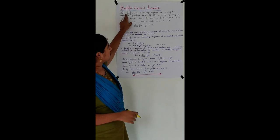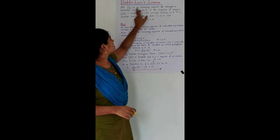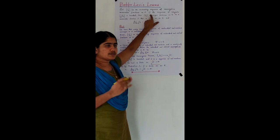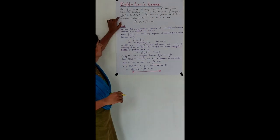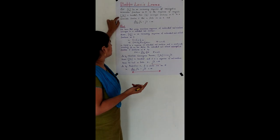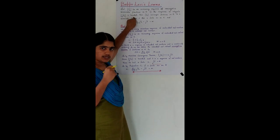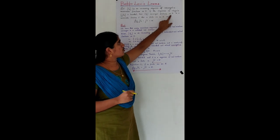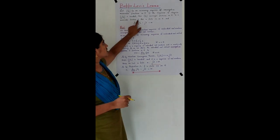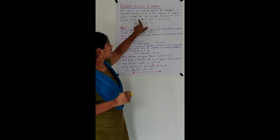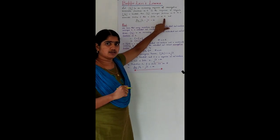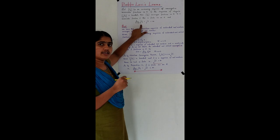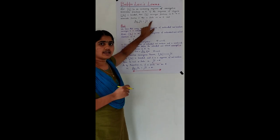We are given a sequence of increasing non-negative measurable functions defined on E. We suppose that the sequence of integrals over E of Fₙ is bounded. We need to prove that the sequence {Fₙ} converges pointwise on E to a measurable function F, that F is finite almost everywhere on E, and also that the limit as n tends to infinity of the integral over E of Fₙ equals the integral over E of F, and that this is finite.